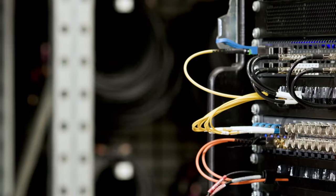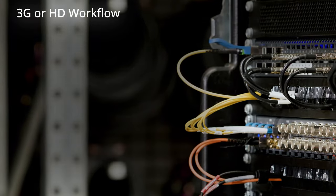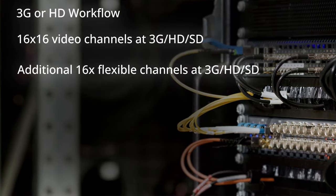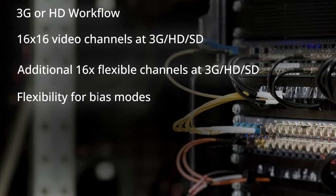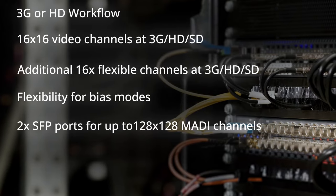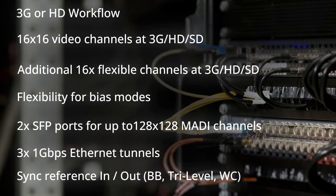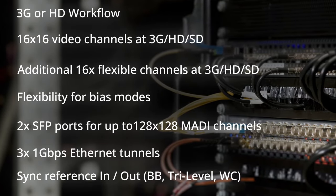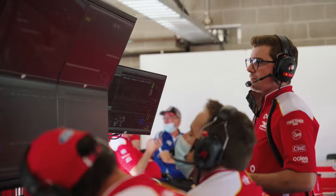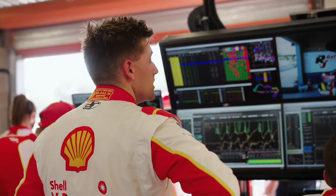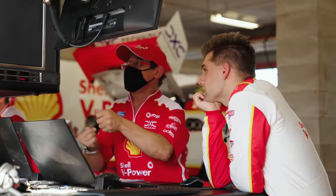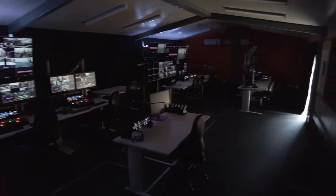In a 3G or HD workflow, up to a total of 48 video channels are available. 16x16 are fixed I/O and an additional 16 I/O are in a switchable direction. This flexibility allows the frame to operate in bias modes of 16x32 or 32x16, or any combination in between.